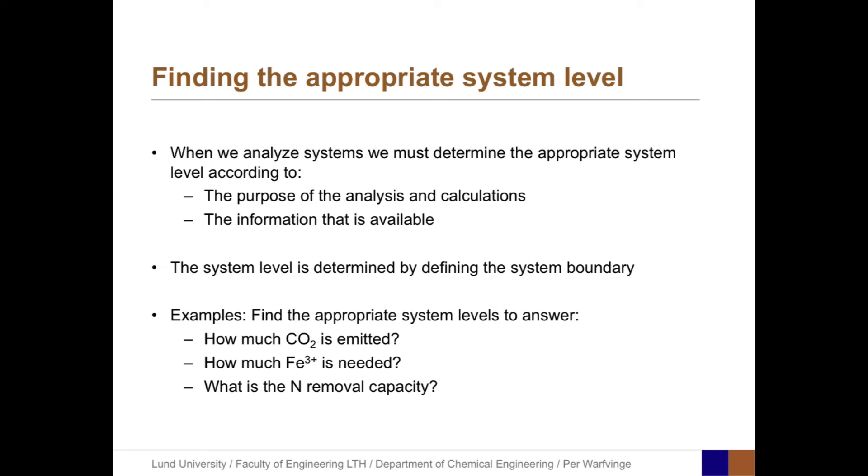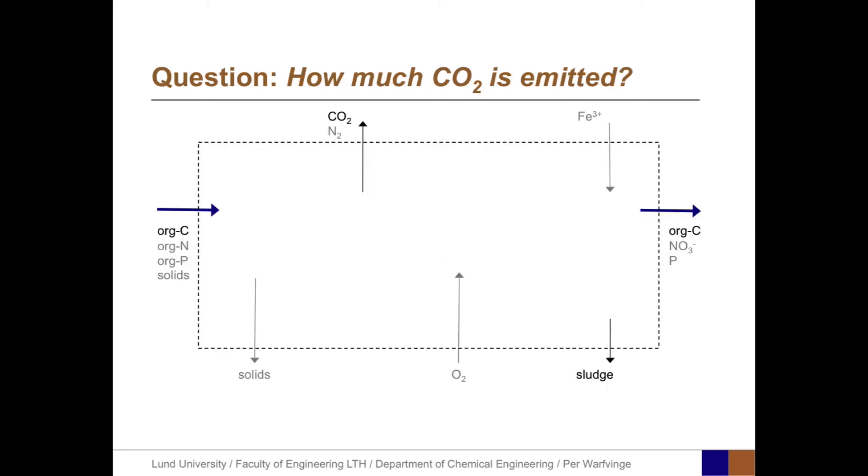To give three examples, let's find the appropriate system levels to answer: how much CO2 is emitted from the water treatment plant, how much iron is needed, and what is the N removal capacity. For the first question, we can use the overall picture, the overall input-output, and only focus on the fluxes of carbon in and out of the system.